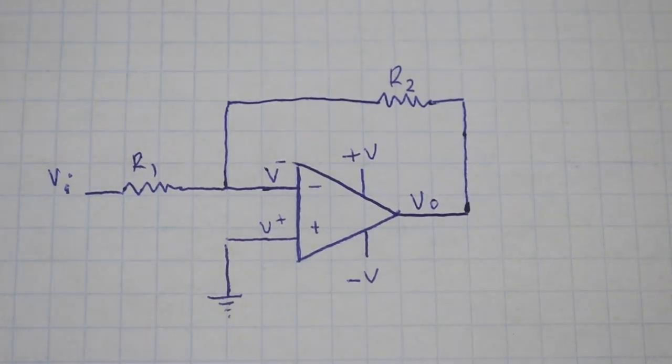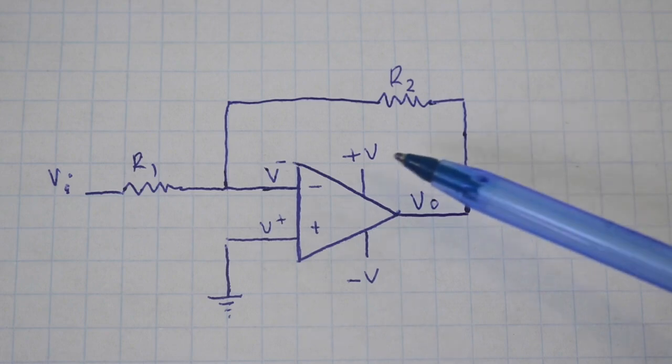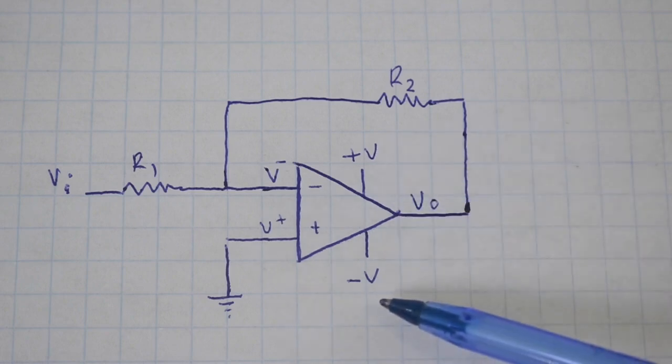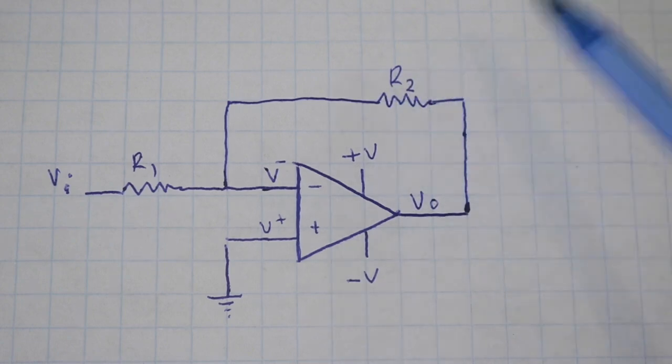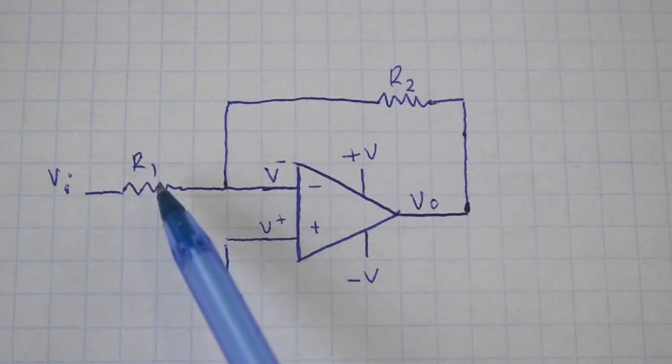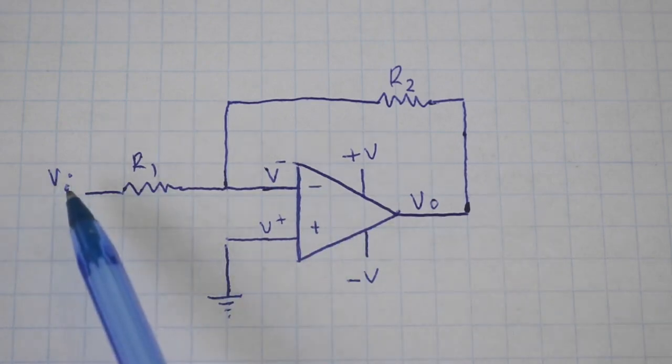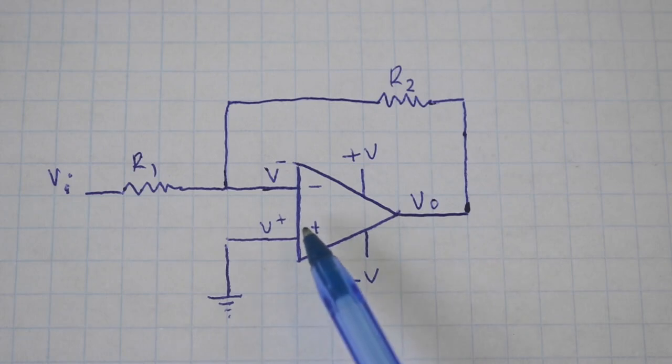Here we have the connection in the closed loop configuration of an op amp. The input voltage of the amplifier, plus and minus, here we have the output voltage. A resistor here that goes to the inverting input, another resistor from the input voltage, and the non-inverting input is connected to ground, that means that its voltage is always zero volts.